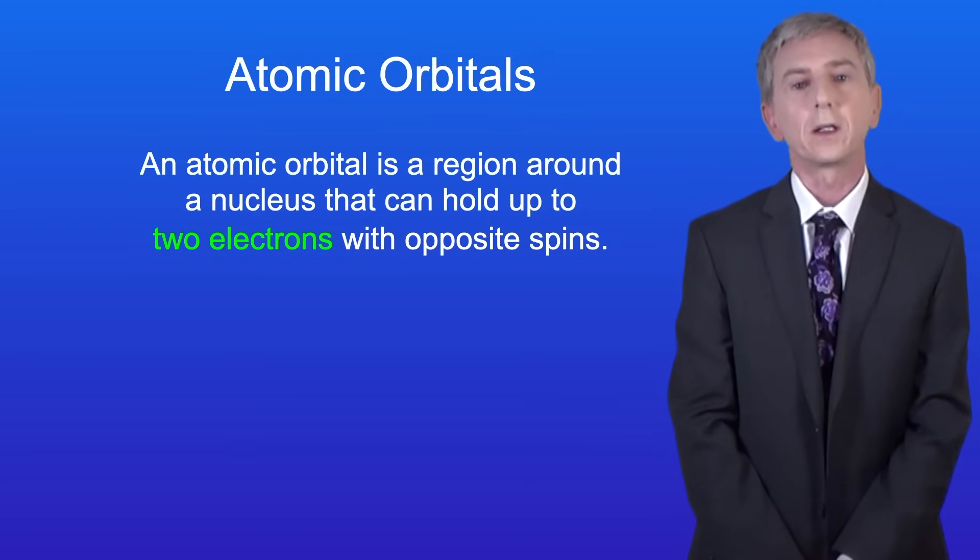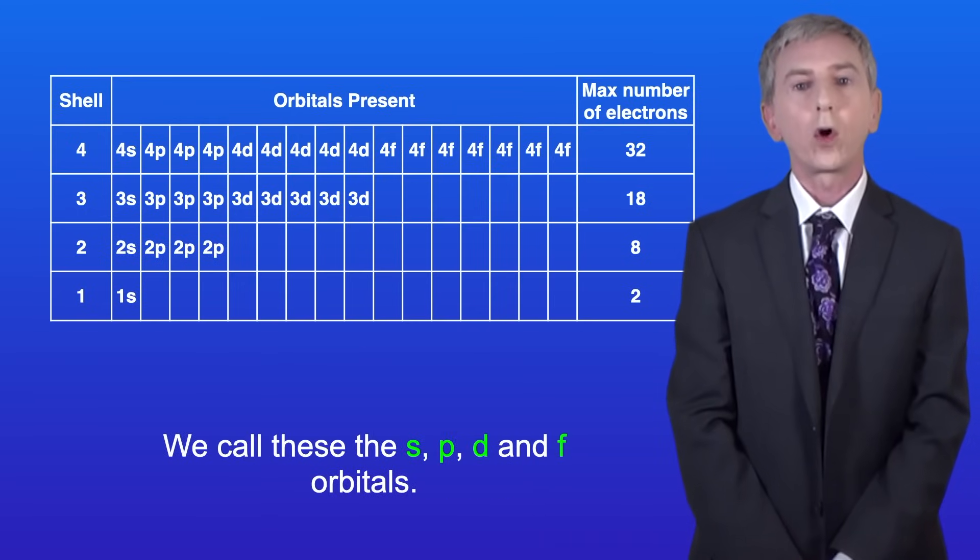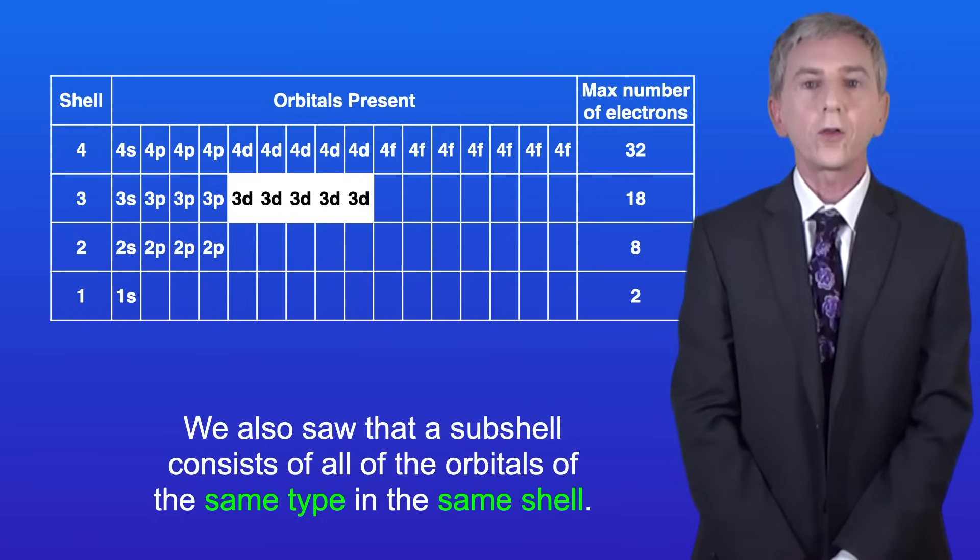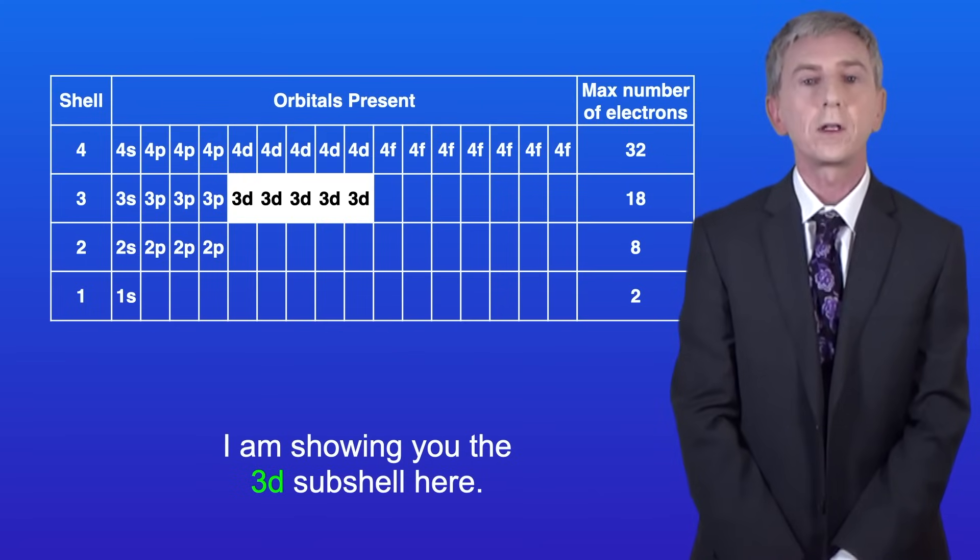In the last video we saw that an atomic orbital is a region around a nucleus that can hold up to two electrons with opposite spins. We saw that there are several different types of orbitals and we call these the s, p, d and f orbitals. We also saw that a subshell consists of all of the orbitals of the same type in the same shell, and I'm showing you the 3D subshell here.